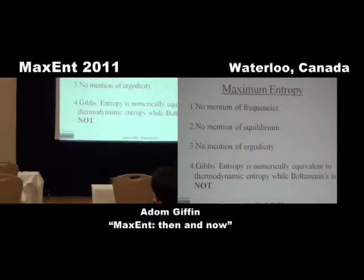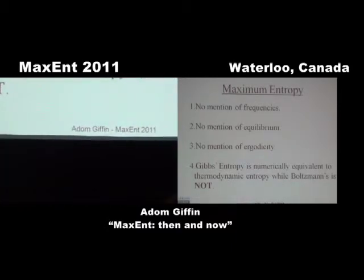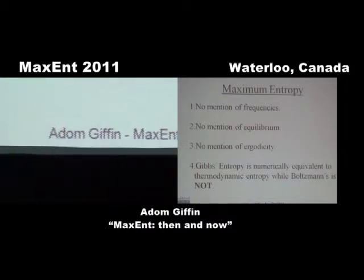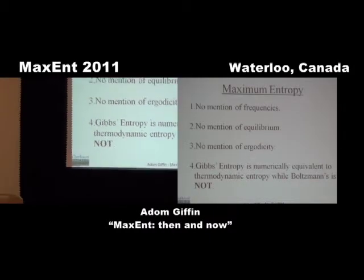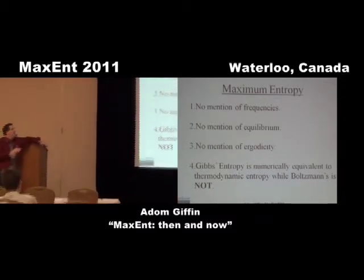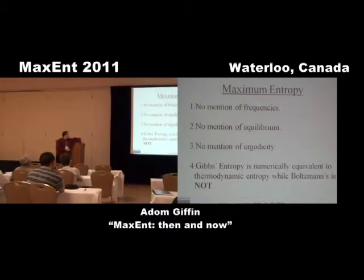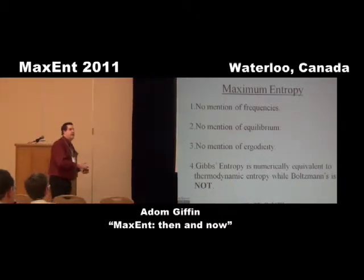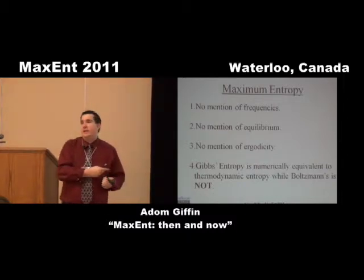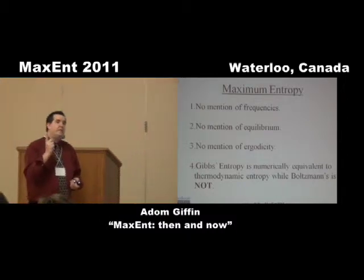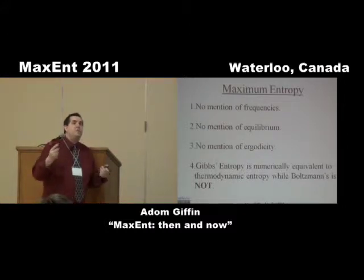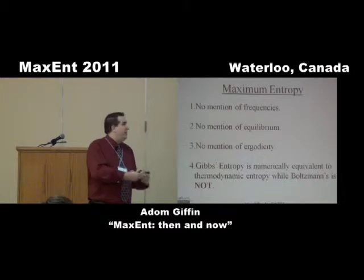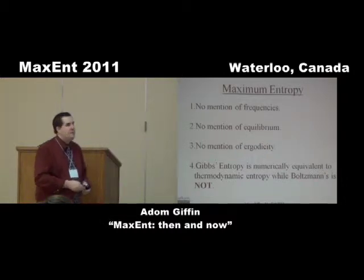A couple of things I want to mention about this derivation for Gibbs' distribution. There's no mention of frequencies — we just determined the P that satisfies those constraints under the maximization condition. There's also no mention of equilibrium. It happens to be that if you're doing a problem with gas in a box and you use that particular information, it better be at equilibrium. Otherwise you're going to get very wrong answers. But the point is that the information I'm supplying is equilibrium information. It doesn't have to be equilibrium information — I can do a non-equilibrium problem if I supply non-equilibrium information. And that's a really key point.